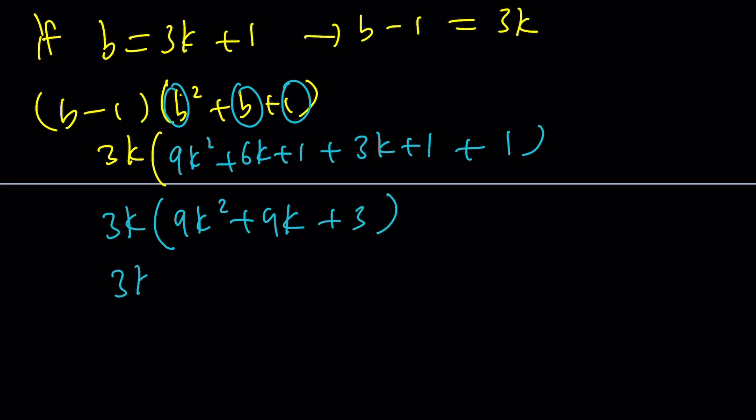Awesome. We can take out another 3 here, which is going to give us 3k × 3(3k² + 3k + 1), which is kind of like 9k(3k² + 3k + 1). Guess what? We want this product to be divisible by 3. Not only that, it's also divisible by 9. Make sense?